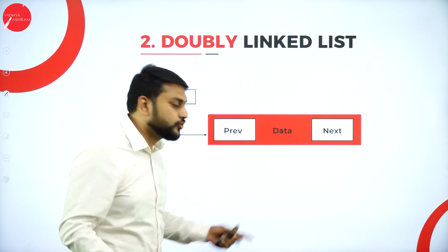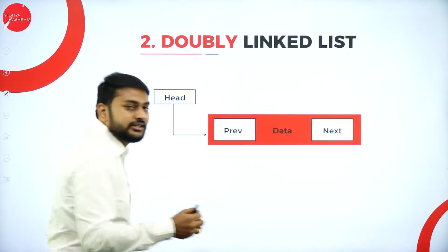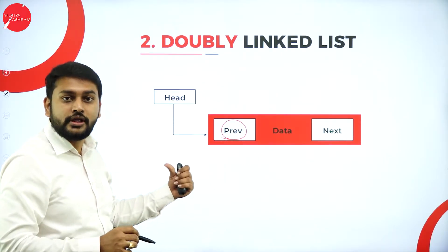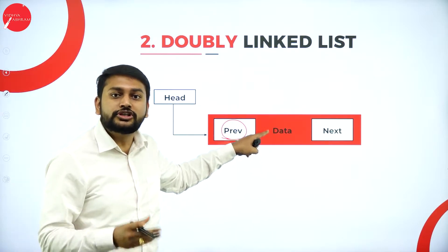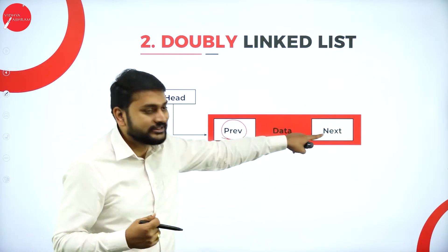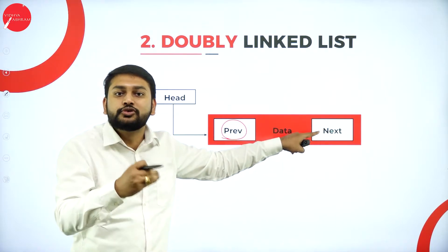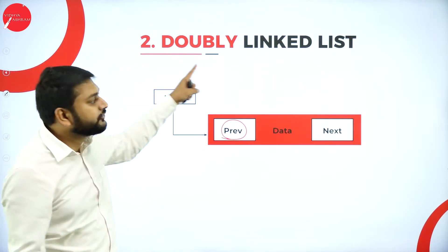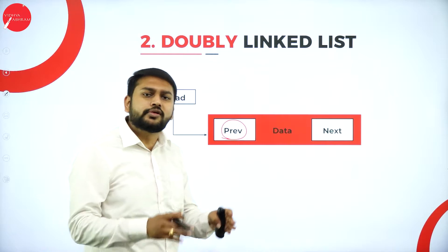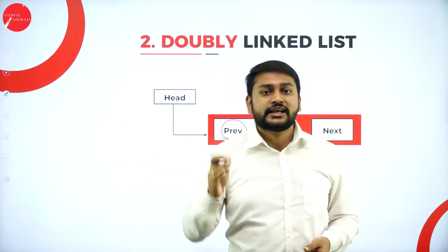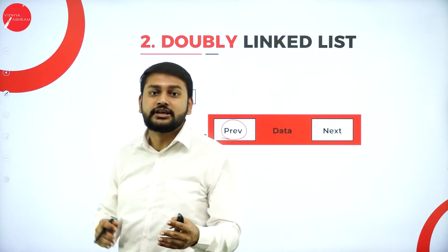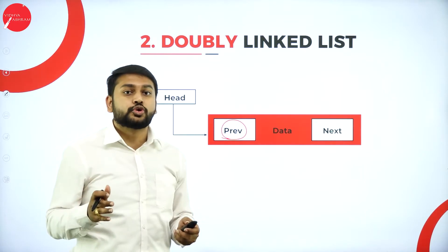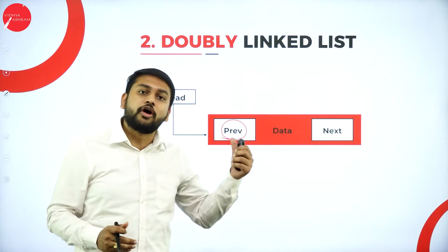The speciality of this node is that it has three different parts. The first part stores the reference of the previous node, the middle part stores the data, and the last part stores the reference of the next node. This is the speciality of the doubly linked list. In this session I will discuss how to insert and delete nodes, and also show the memory representation.